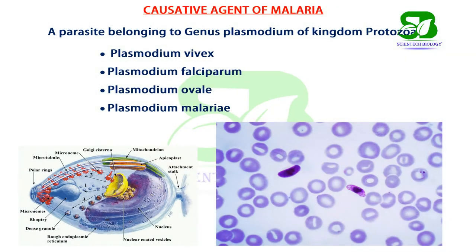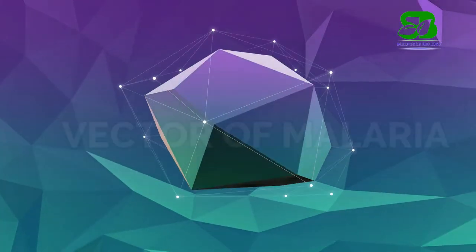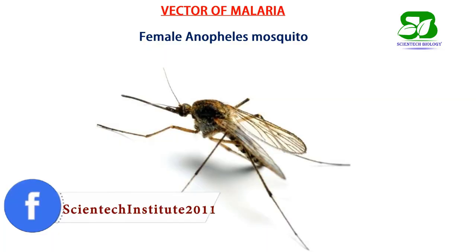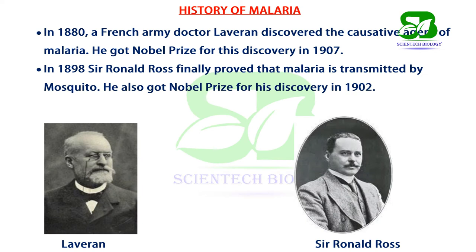Plasmodium, an intracellular parasite, is the cause of malaria. This parasite has several species like Vivax, Falciparum, Ovale, and Malariae. Malaria is transmitted by a female Anopheles mosquito. A French army doctor, Laveran, first discovered the causative agent of malaria in 1880, and in 1898, Sir Ronald Ross proved that this parasite is transmitted by mosquito.